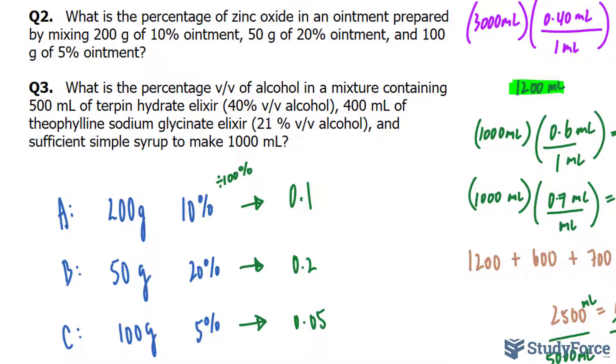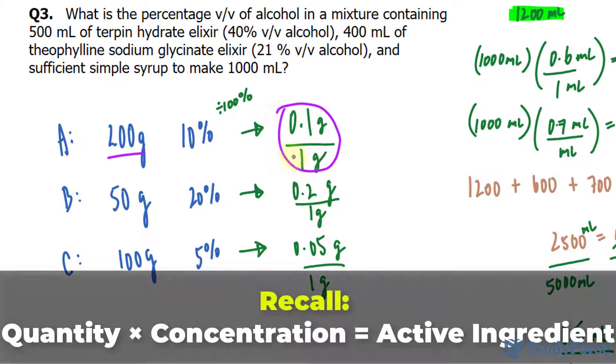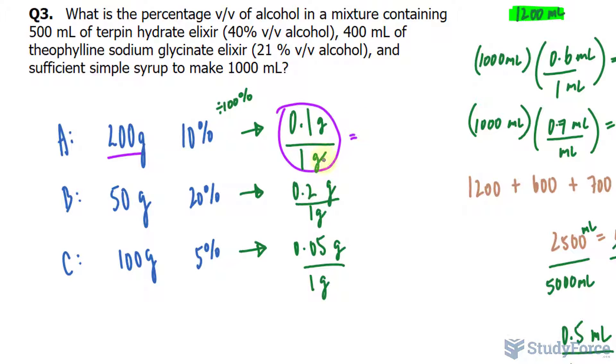Let's interpret what this means. 0.1 tells us the amount of zinc oxide in grams per 1 gram of that part of the mixture. And similarly 0.2 represents 0.2 grams of zinc oxide per 1 gram of the second part of the mixture. And this is 0.05 grams of zinc oxide per 1 gram of the third part of the mixture. So by multiplying 200 and this value, we end up with the amount of zinc in 200 grams, as opposed to only a single gram.